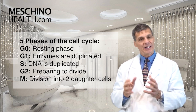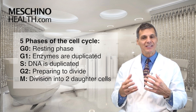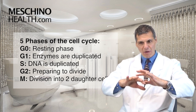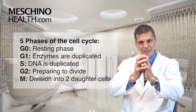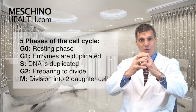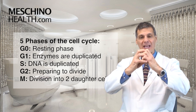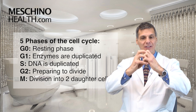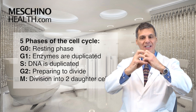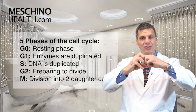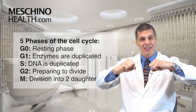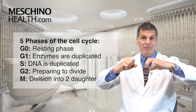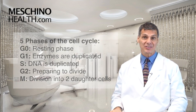The final phase is known as the M phase. That's where everything's been replicated within the cell, which is now swollen. This is the mitotic phase, where the one cell divides into two daughter cells — now you have two completely formed cancer cells.